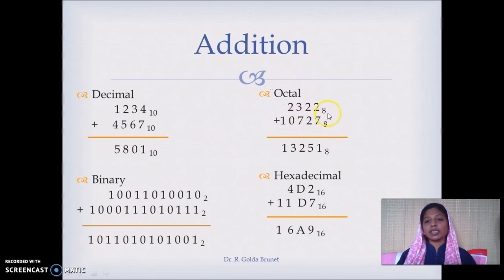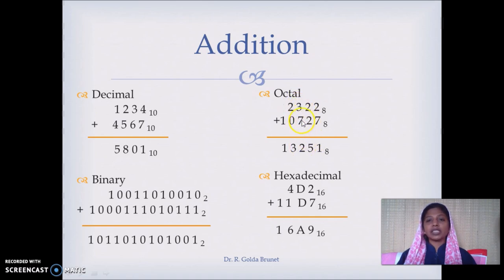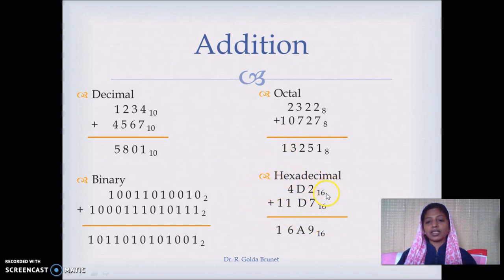In the octal number system, 7 plus 2 is 9, which is not a valid octal number. So we convert decimal 9 to octal and get 11 in octal. We write 1 and carry forward 1. Then 1 plus 2 plus 2 is 5. Then 3 plus 7 is decimal 10, which converts to 12 in octal, so we write 2 and carry forward 1. Then 1 plus 2 plus 0 is 3, and the leading 1 comes here.